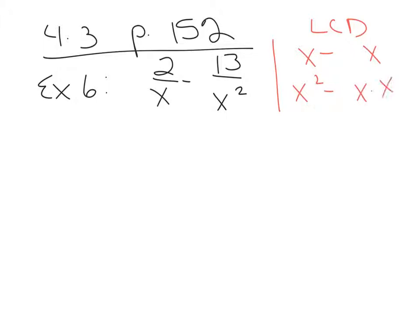So these are the prime factors. The common denominator takes the entire first list, so I'm going to take an x, and then look at the second list. I already have one of these x's, so I need to take one more. When I multiply those two together, that takes care of both lists — the common denominator is x squared.